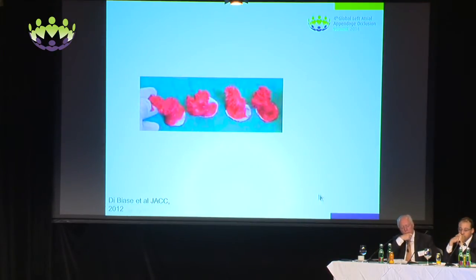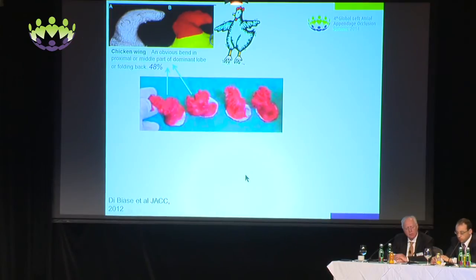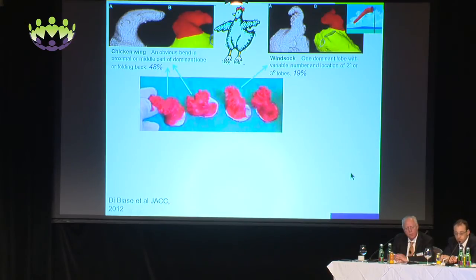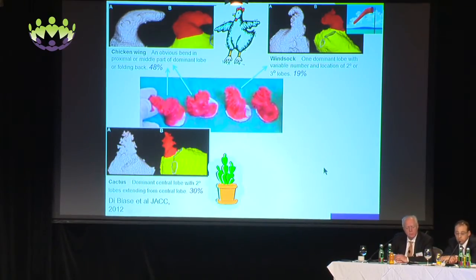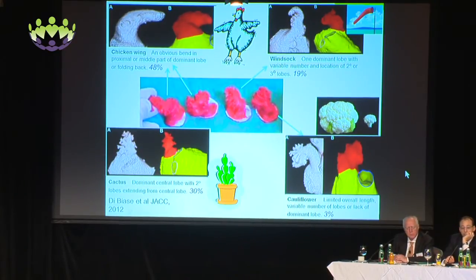In terms of the shapes of the appendage, Di Biase et al. in JACC described them very graphically on CT imaging. The chicken wing configuration — where there's an obvious bend in the proximal or middle part of the dominant lobe, or a folding back — encountered in about 48% of their sample. Then there's the windsock pattern, with one dominant lobe and a variable number and location of secondary or tertiary lobes, counted in 19%. About a third had what they described as a cactus pattern — a dominant central lobe with secondary lobes extending from it. Finally, the cauliflower pattern, reckoned at only about 3%, with limited overall length, variable number of lobes, or lack of a dominant lobe.